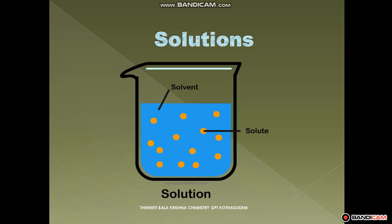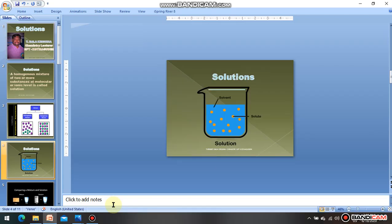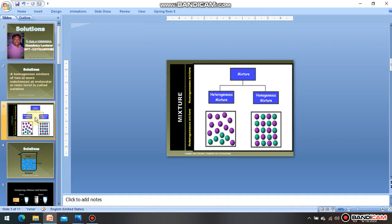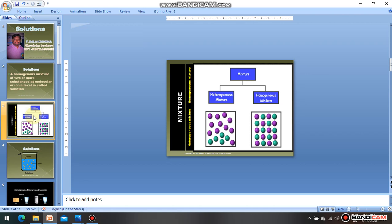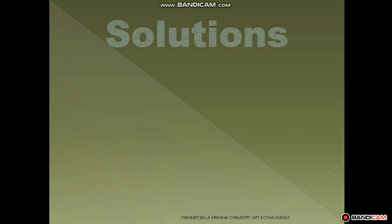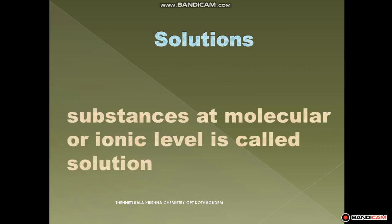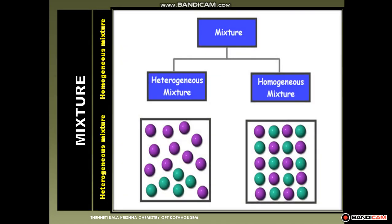Example for solution. A mixture is a combination of two compounds. So if we are going to discuss about the solution, we need to know the definition of mixture. Mixture means a combination of two or more products is called a mixture.